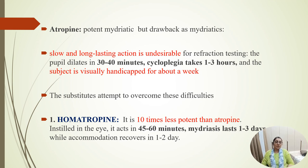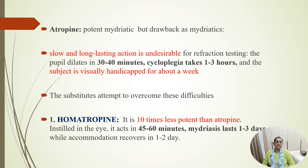For ophthalmic use, atropine is a potent mydriatic but its slow and long-lasting action is undesirable for refraction testing. The pupil dilates in 30 to 40 minutes, cycloplegia takes 1 to 3 hours, and the subject is visually handicapped for about a week. Better substitutes are available.